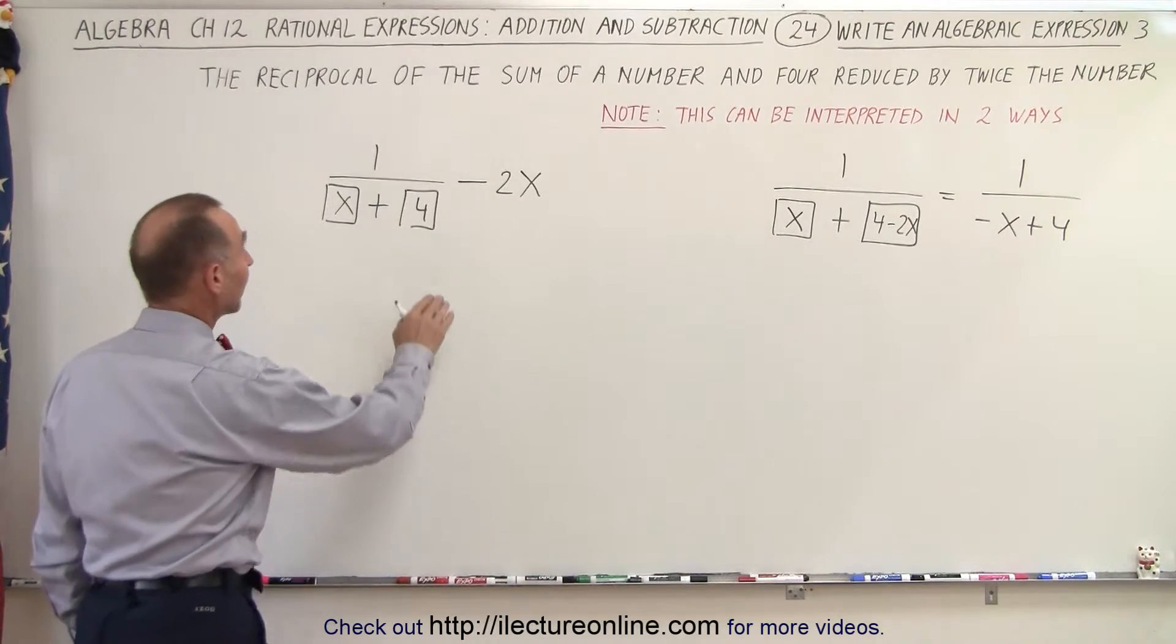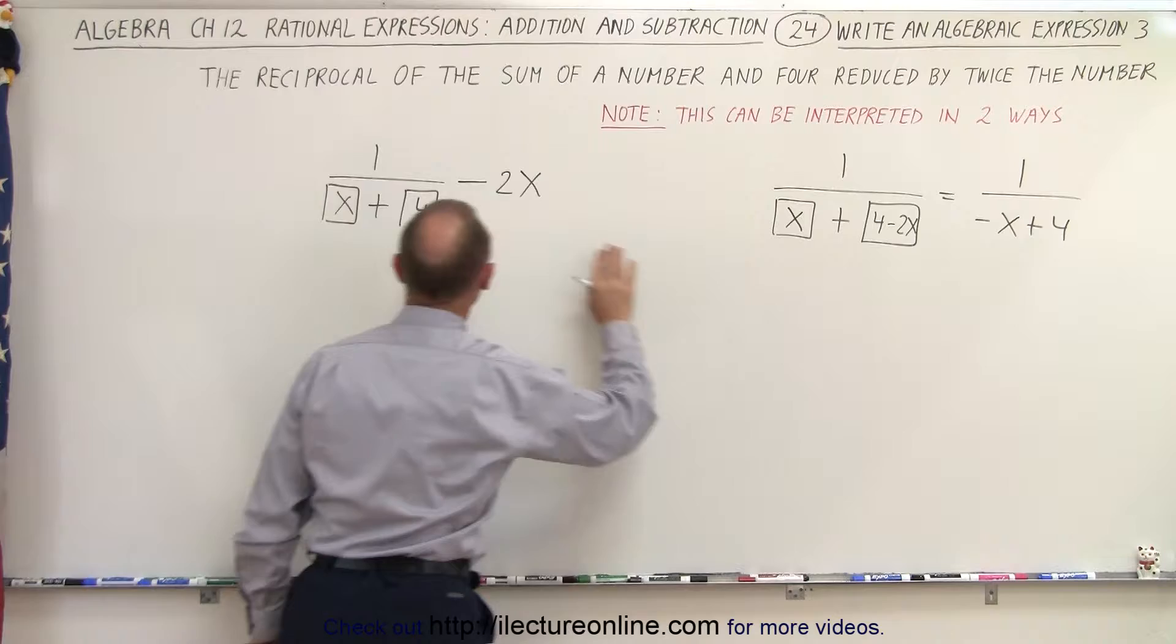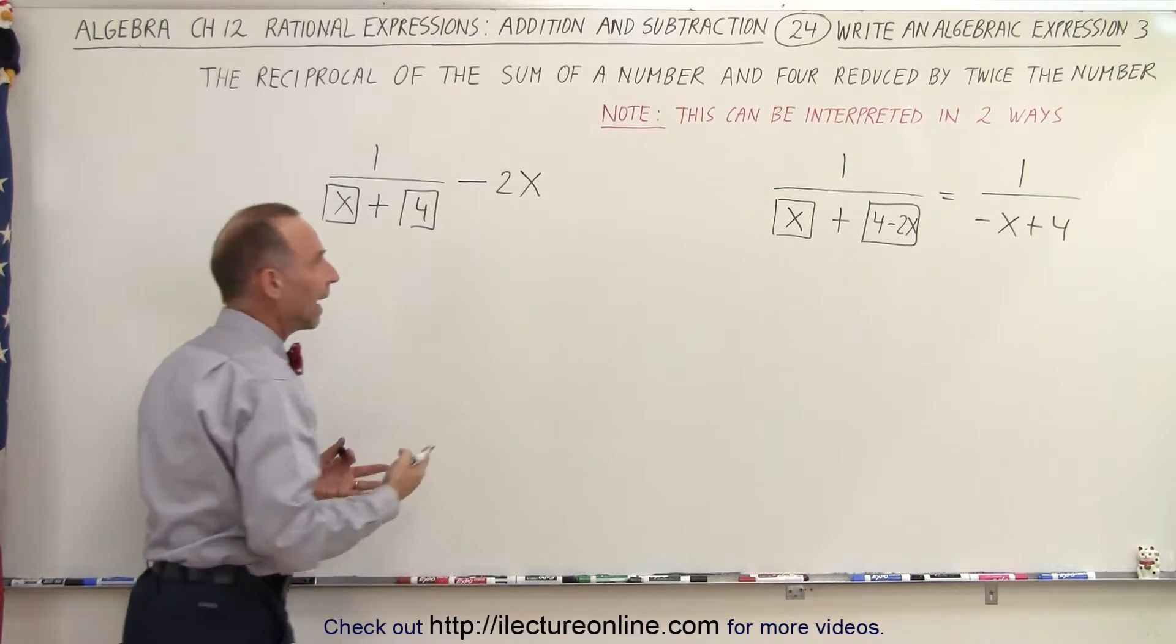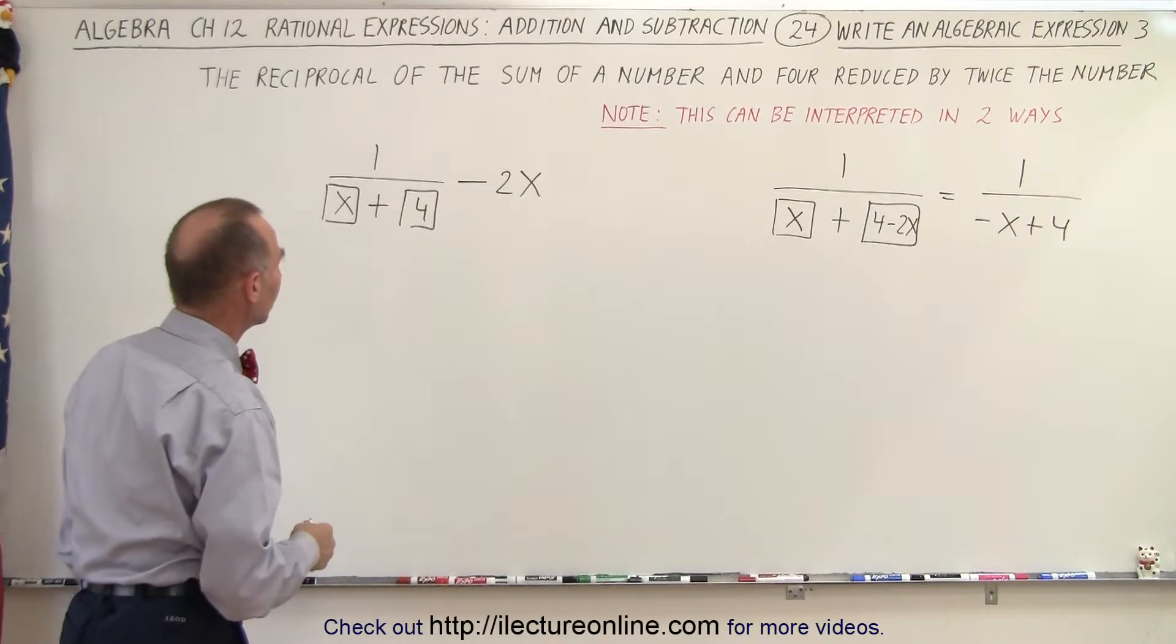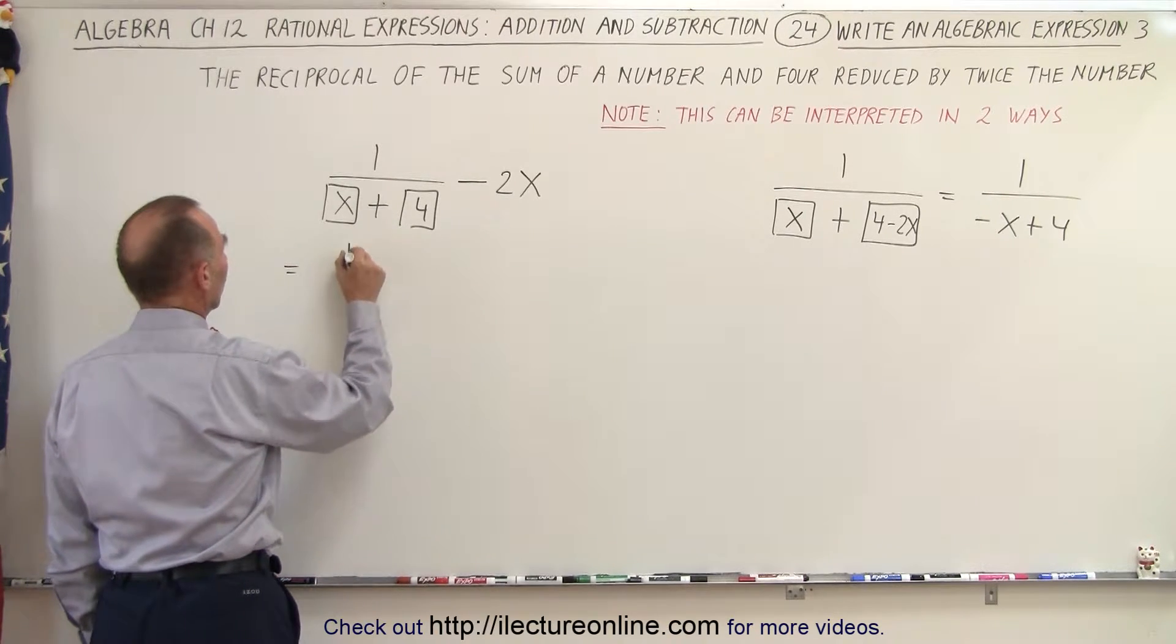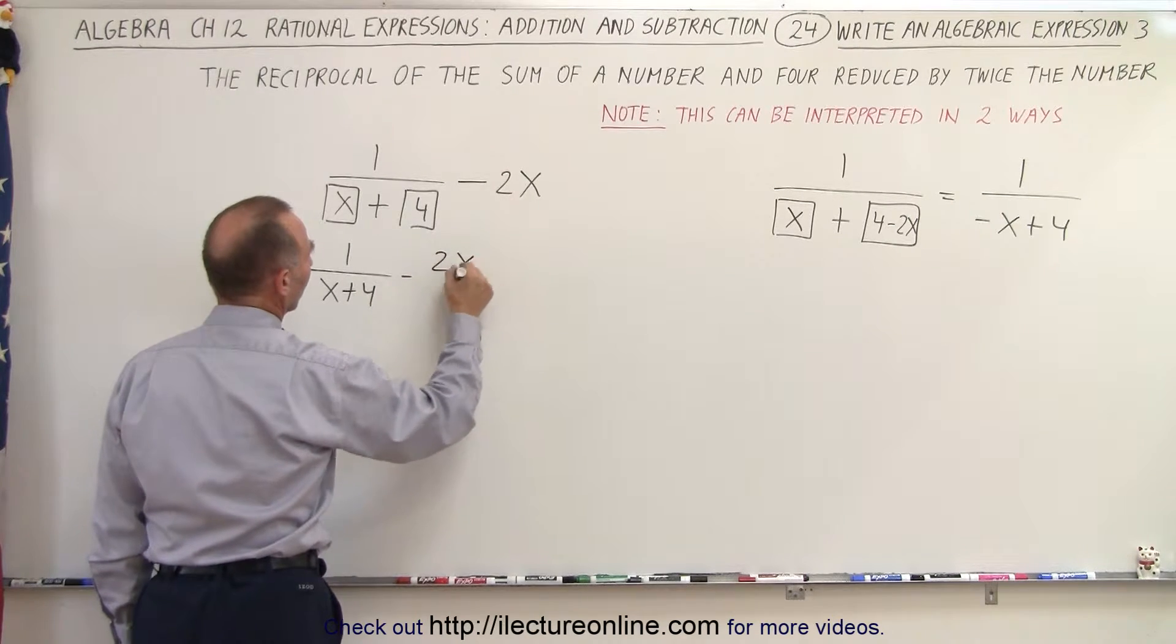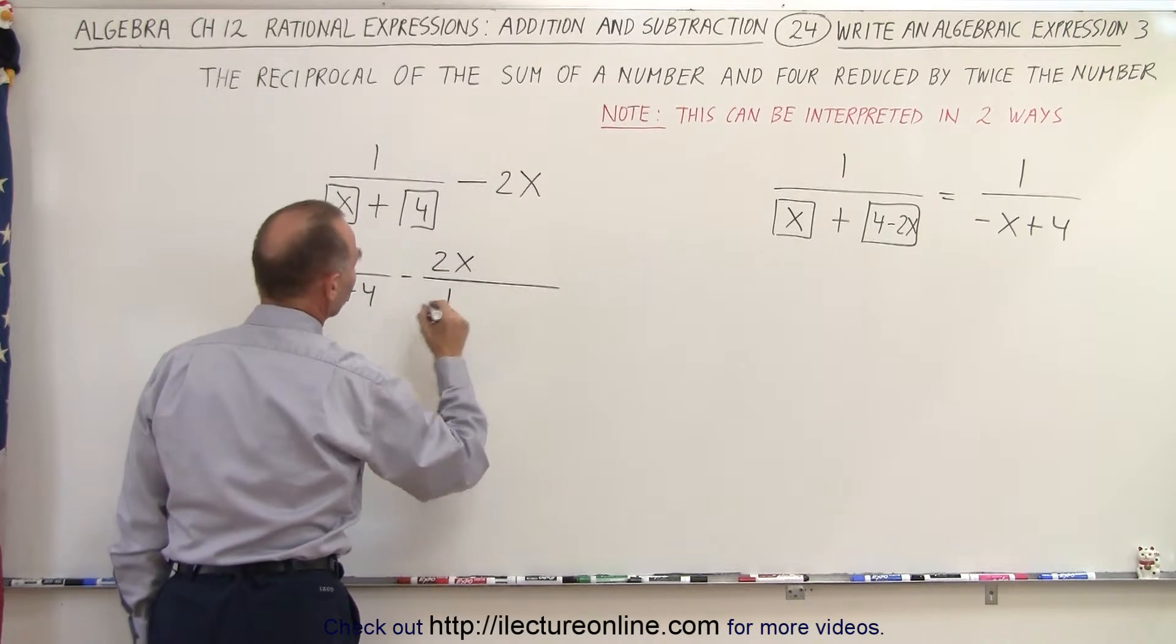Now we can go ahead and take this form because this one is already in its simplest form. We can take this form and write it as a single rational expression. In order to do that we need to find the common denominator. So this can be written as 1 over x plus 4 minus 2x and we're going to write this over 1.